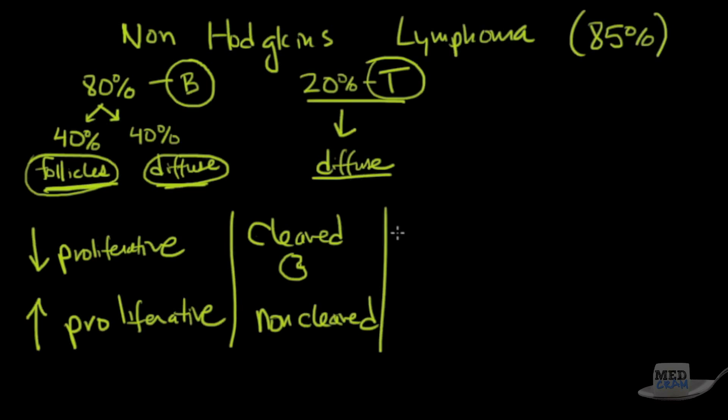What's the next characteristic? What about small versus large? So small is going to be less proliferative. Large is going to be more proliferative. If they look mature, that means they look more like the normal thing, which means they're not going to be as proliferative. And if it's immature, that means it's going to be more proliferative. It's another characteristic. We talked about this already, follicles versus diffuse.